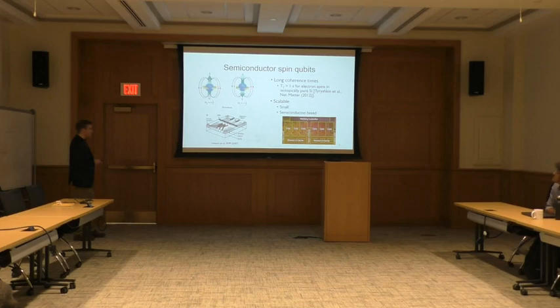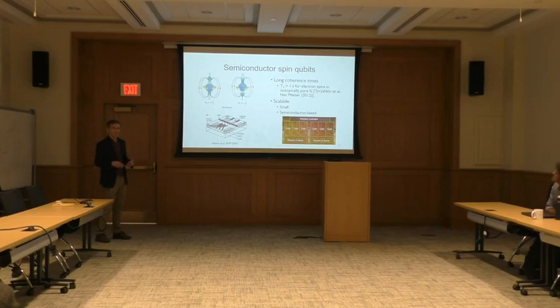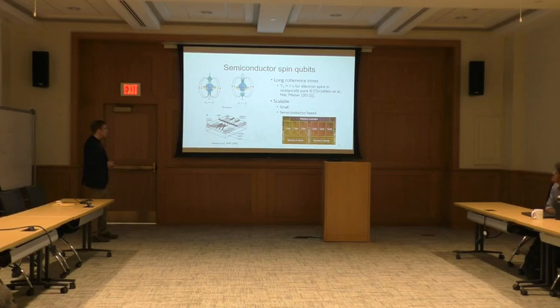Some of the nice things about quantum dot spin qubits, especially compared to other types of qubits, are that they have extremely long coherence times. The phase coherence time of individual electron spins in isotopically pure silicon can exceed one second. They're also scalable in the sense that they're rather small — typical sizes are 50 to 100 nanometers per qubit — and they're based in semiconductors, so one can imagine taking advantage of global expertise in semiconductor fabrication to scale up these devices.